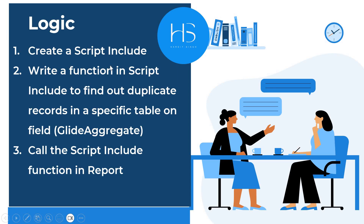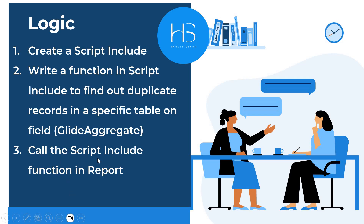This is the logic which we will be following. In the first step we will be creating a script include and in that script include we will write a function to find out the duplicate records in a specific table on a particular field. We will be using GlideAggregate for that. The script include function will accept parameters for the table and the field name so that we can make this function reusable, allowing other users to find duplicates on different tables as well. Finally we will call the script include function in the report.